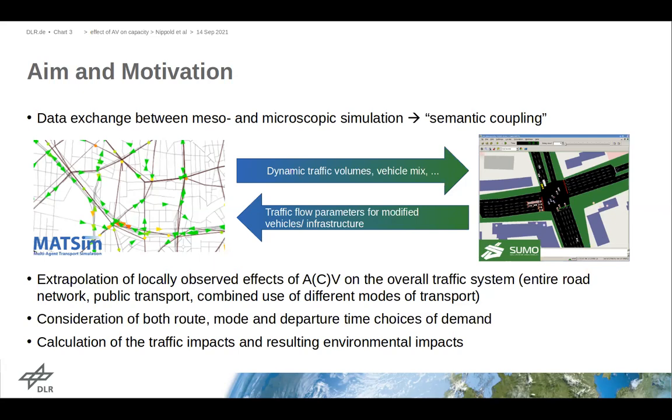The first question we had in this project was: what will be the outflow rate at signal-controlled intersections for a certain share of conventional and autonomous vehicles?